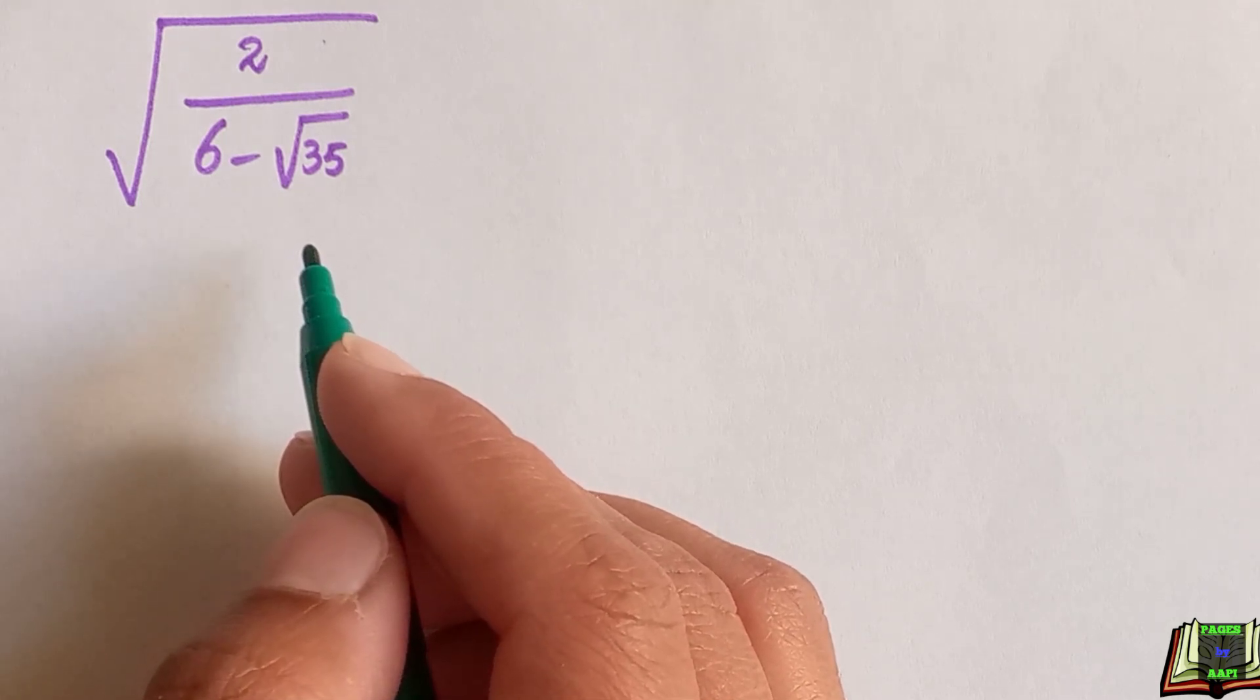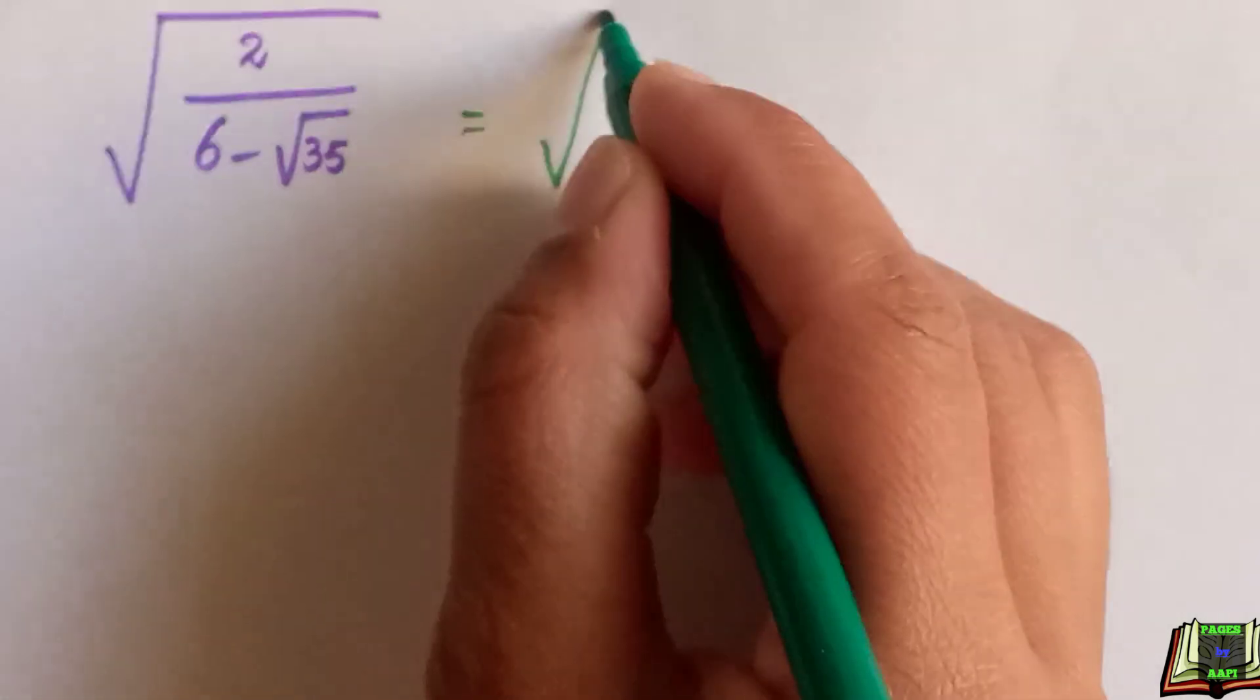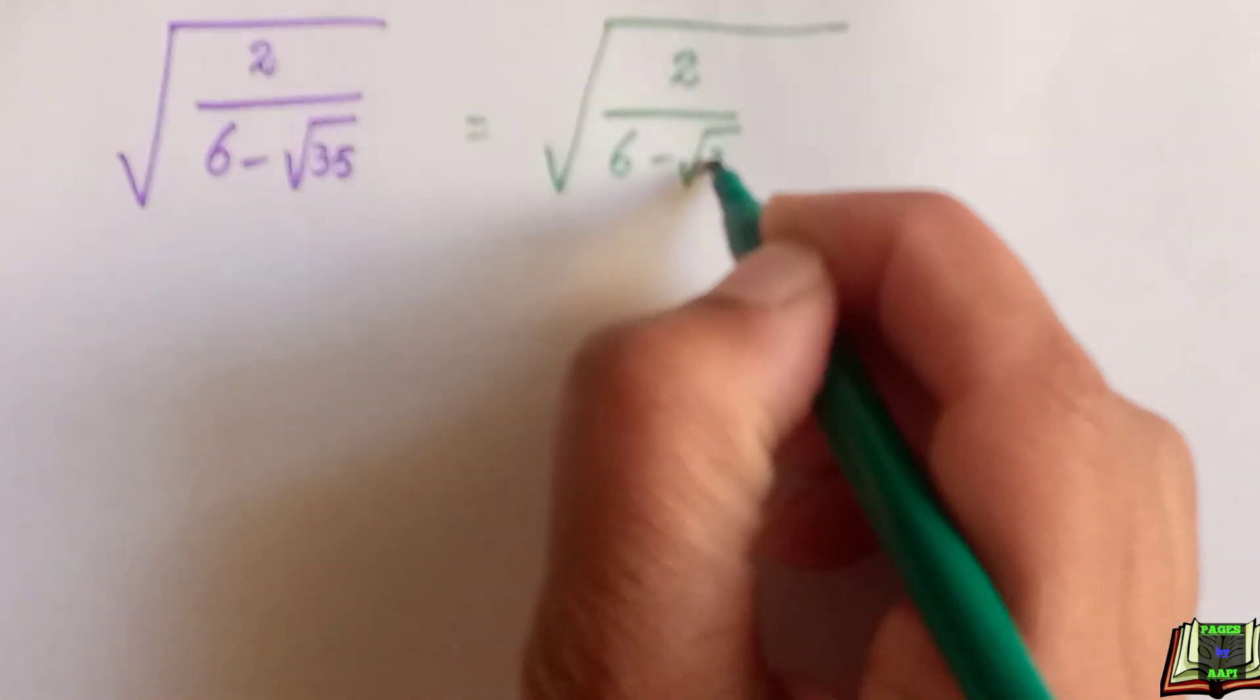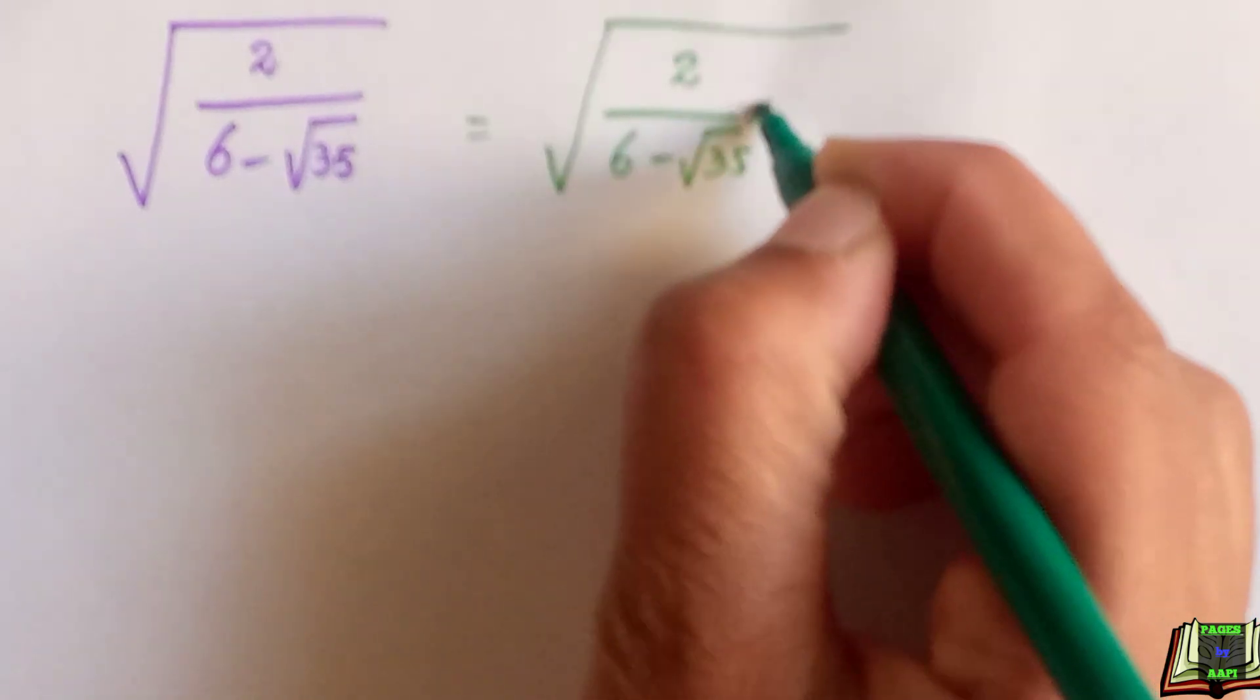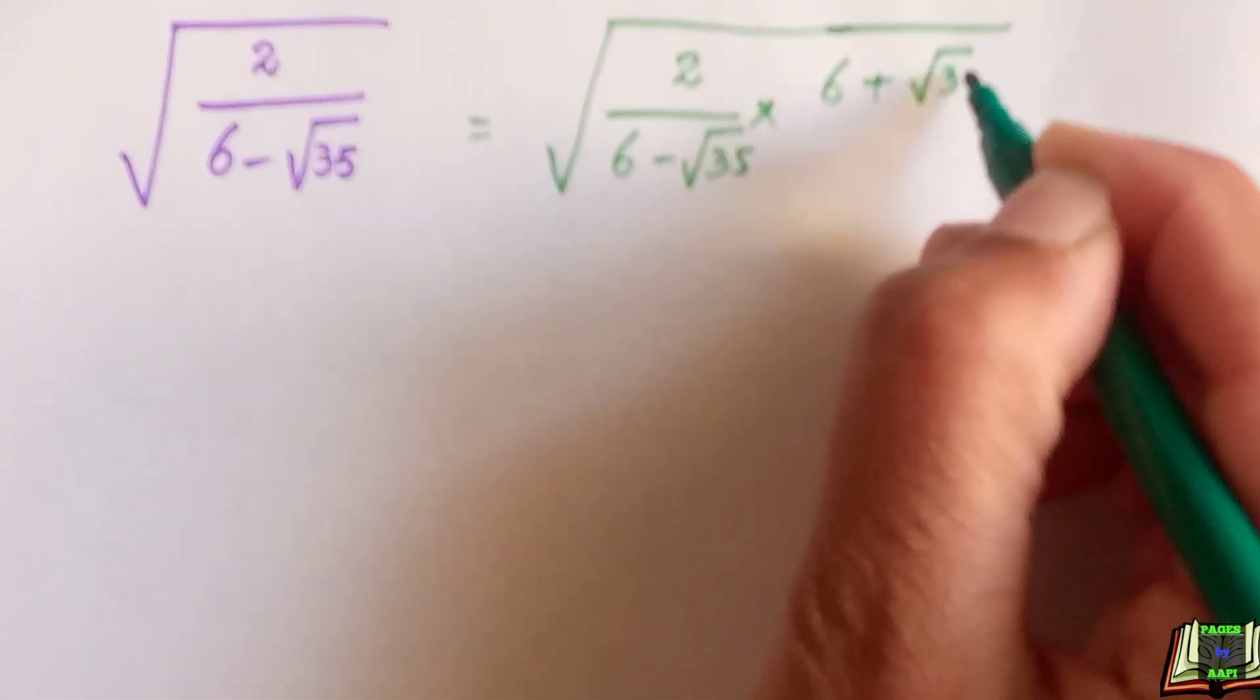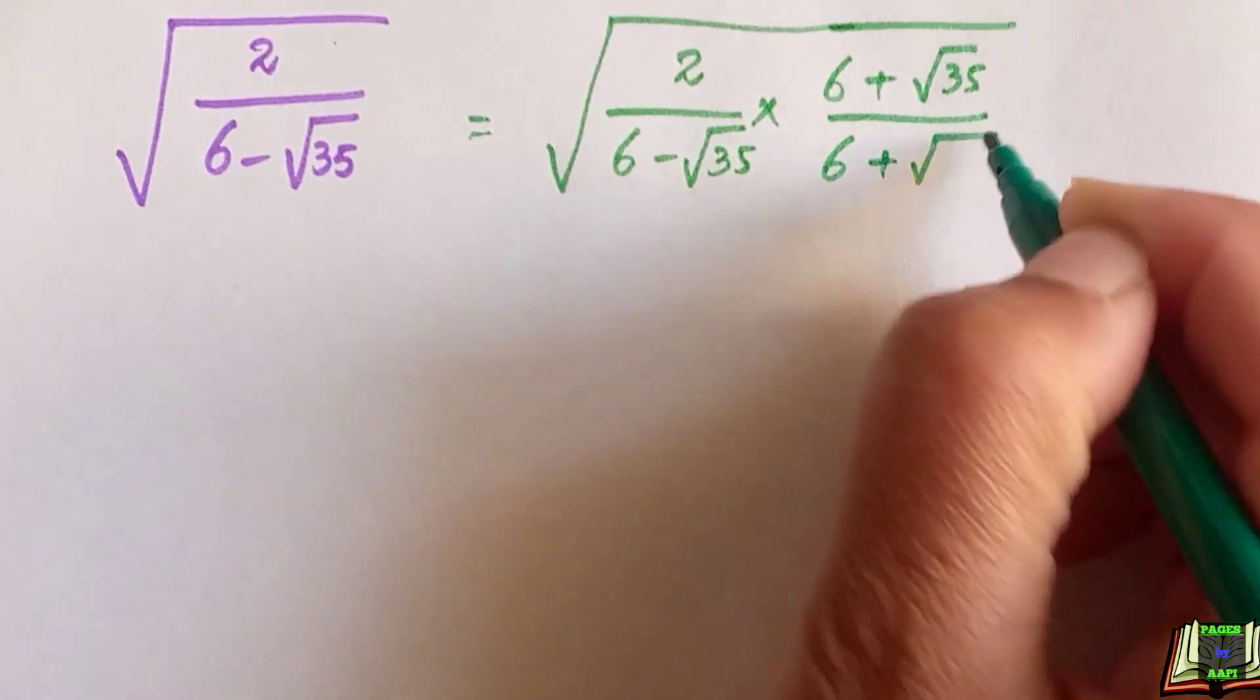To simplify this we will take the conjugate. Conjugate means we will change the sign of the denominator and multiply and divide by the whole expression. So it will be equal to square root of 2 divided by 6 minus root 35, multiply by 6 plus root 35 divided by 6 plus root 35. It is the conjugate.